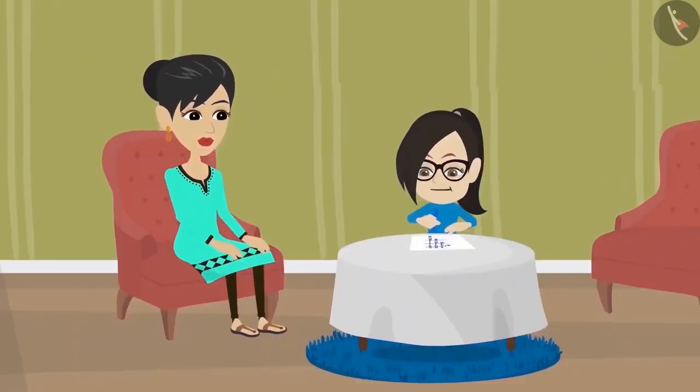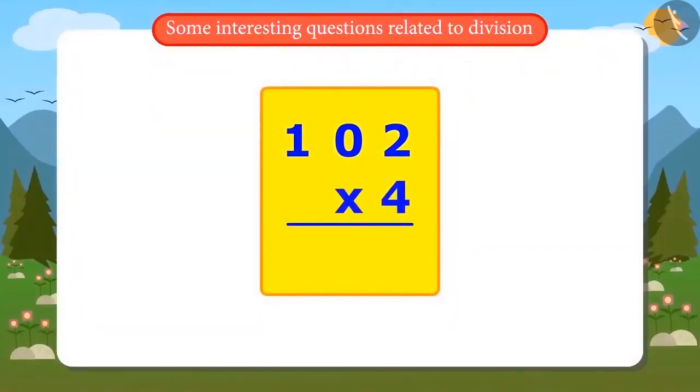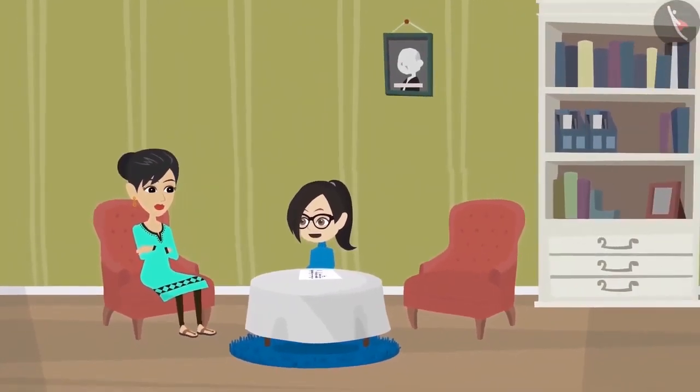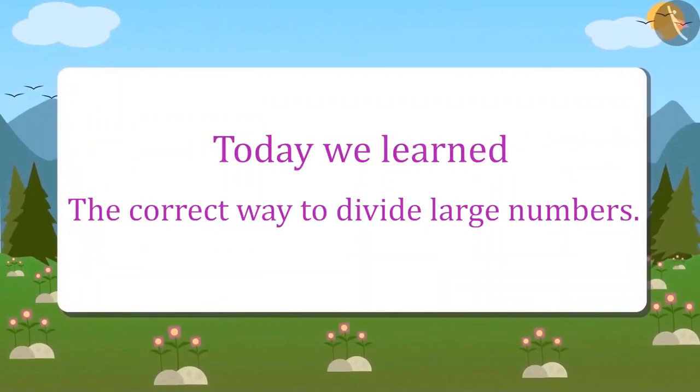Yes. To multiply 102 by 4, I will write it like this. And now I will multiply. The answer came 408. That means I divided it correctly. Today we learned what is the correct way of dividing large numbers.